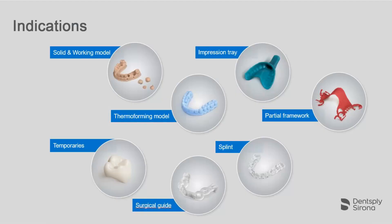PrimePrint solution offers you a wide range of materials and indications. The indications range from different model types, such as working or thermoforming models, to manufacturing splints, temporaries and impression trays, as well as the production of surgical guides and partial frameworks. For each of these indications, a video tutorial is available. The wide variety of indications allows for additional clinical procedures you can offer in your practice and thus for your patients.